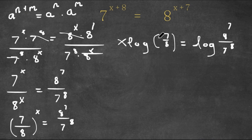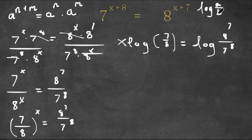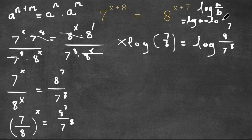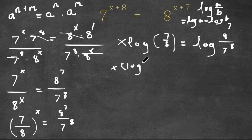And if we have something in the form log a over b, this is equal to log a minus log b. So log 7 over 8 is going to equal x times log 7 minus log 8.